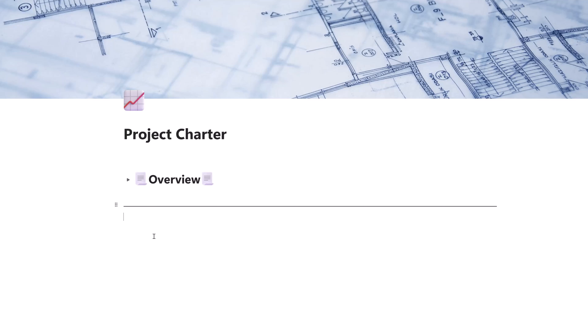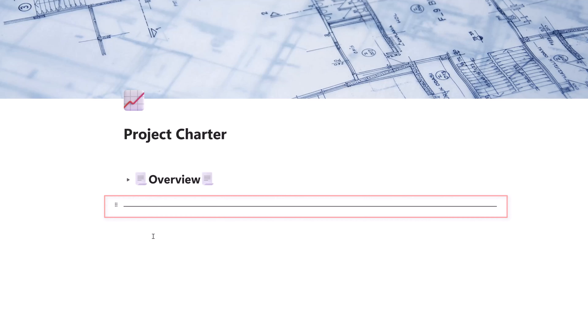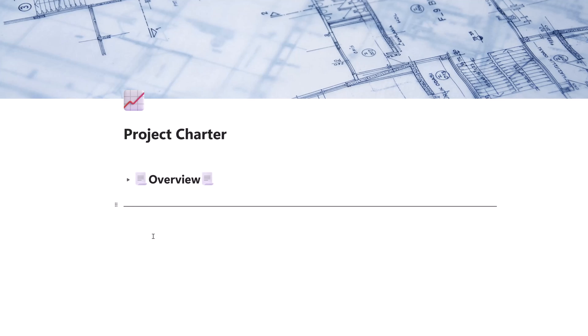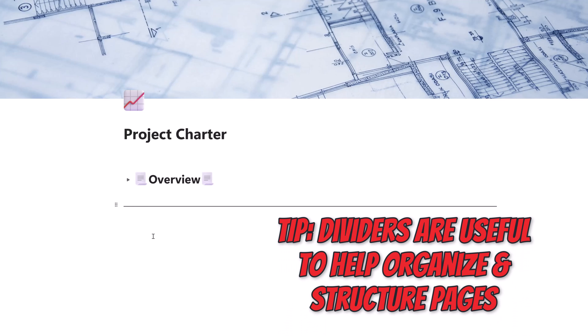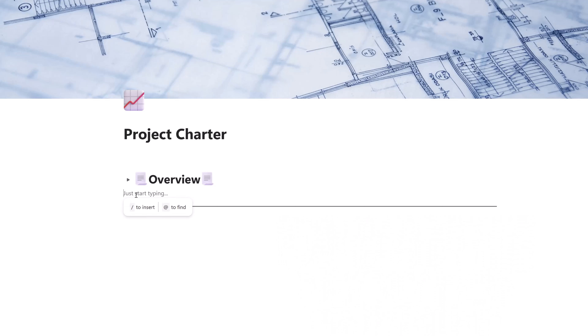The next element we'll add is a divider. Type forward slash and select the Divider option. This adds a divider line between content, which is useful for breaking your page into different sections. It's important to press Enter between your collapsible heading and the divider to ensure the divider itself isn't nested inside the collapsible heading.